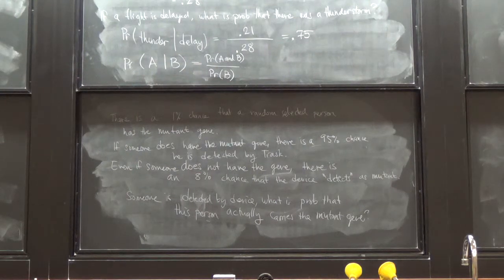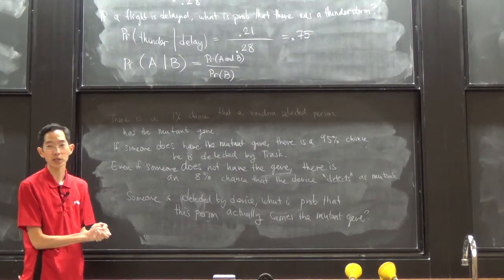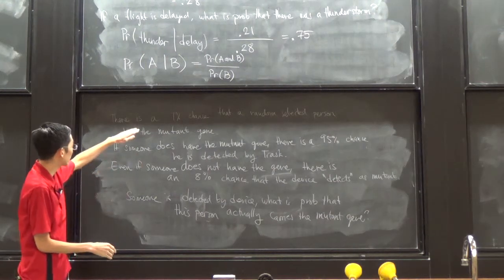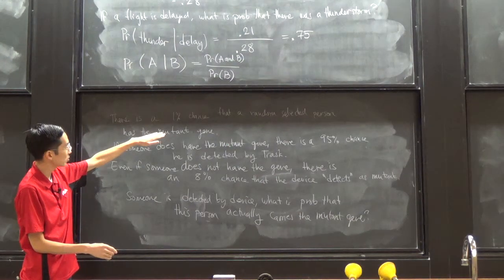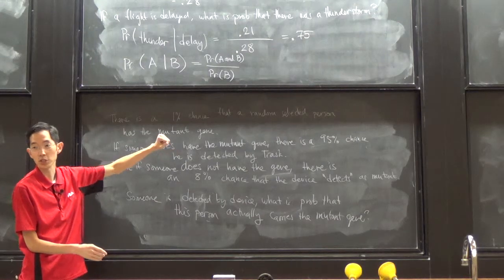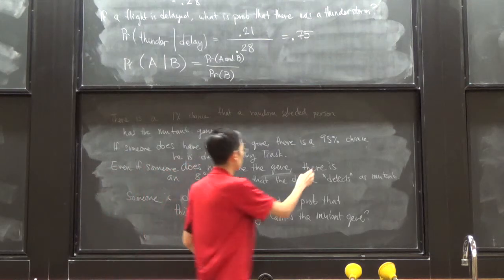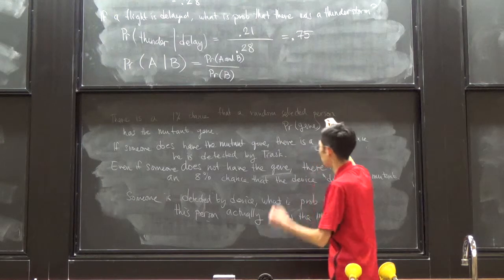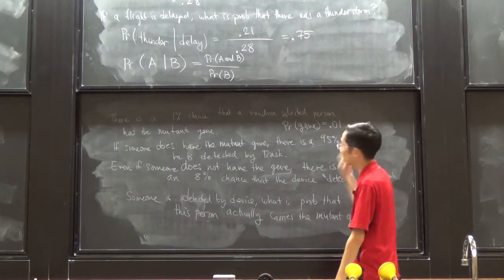Let's try this out. First off, make sure all of the numbers that you have in your notes are correct, because that's very important. The first sentence says: there is a 1% chance that a randomly selected person has the mutant gene. So if we write the probability of carrying the gene, this should be 0.01.